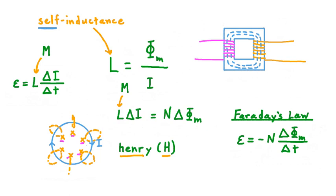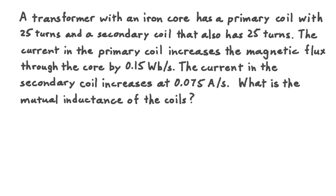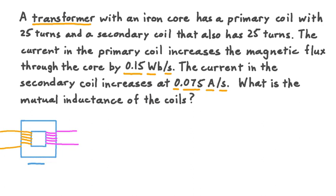Let's try an example exercise. A transformer with an iron core has a primary coil with 25 turns and a secondary coil that also has 25 turns. The current in the primary coil increases the magnetic flux through the core by 0.15 Webers per second. The current in the secondary coil increases at 0.075 amperes per second. What is the mutual inductance of the coils? Let's draw a sketch of this transformer with the primary and secondary coils.